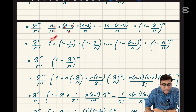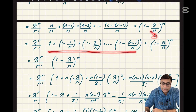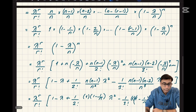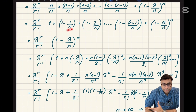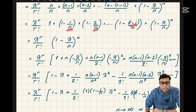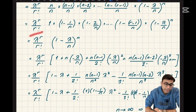Dividing each factor by n: n/n = 1, (n-1)/n = 1 - 1/n, (n-2)/n = 1 - 2/n, and so on up to 1 - (r-1)/n. Since n is approaching infinity, each term like 1/n, 2/n, and so on up to (r-1)/n all approach zero. So every one of these factors simplifies to 1, and multiplying by 1 repeatedly means they all cancel out completely.